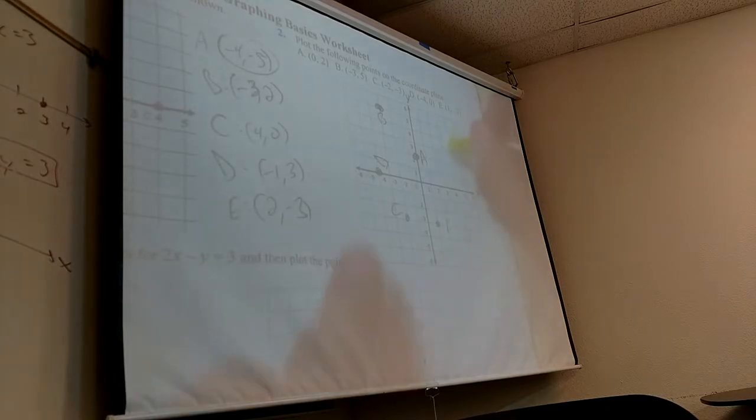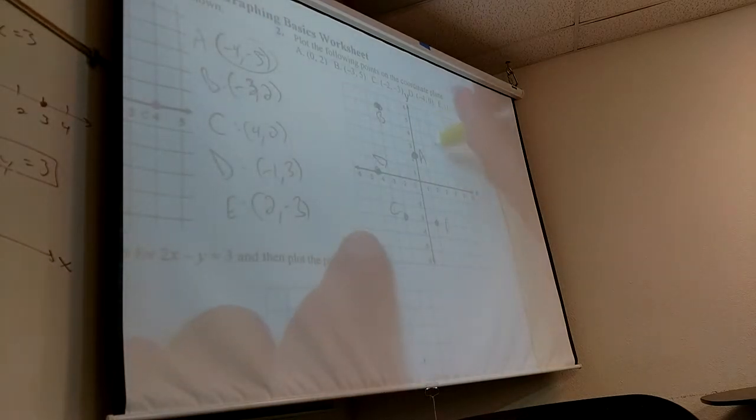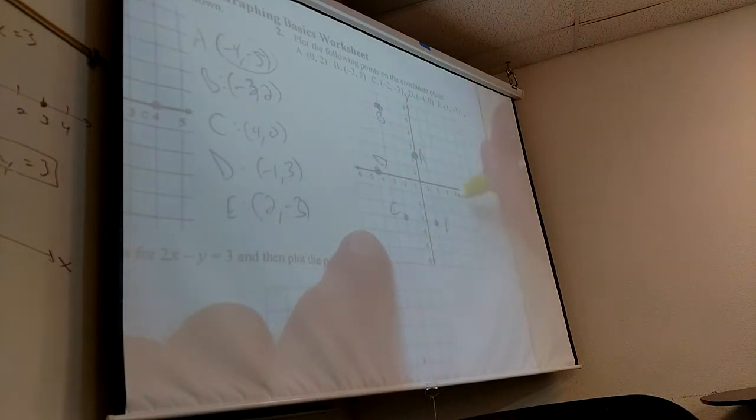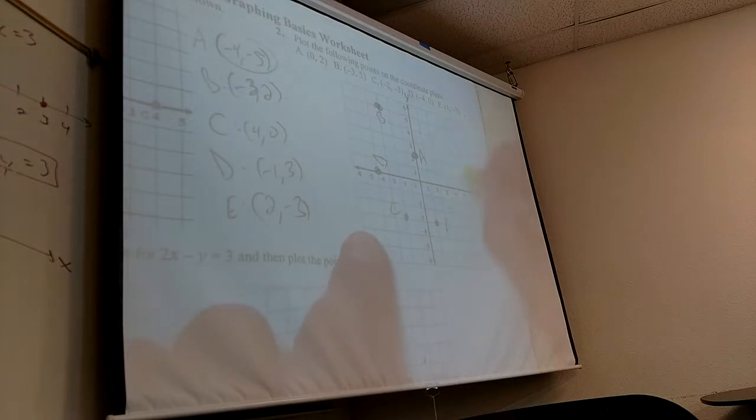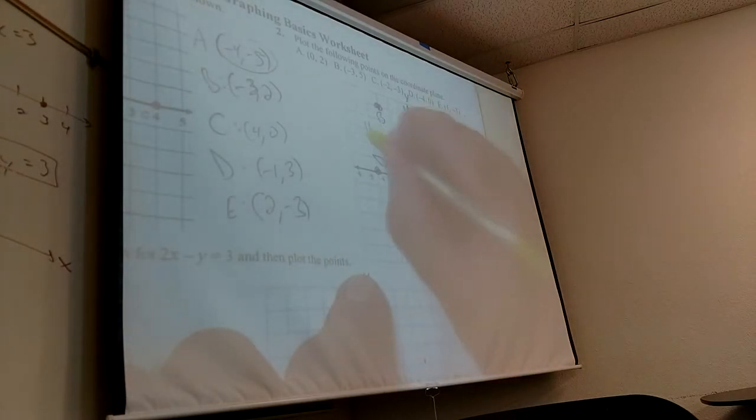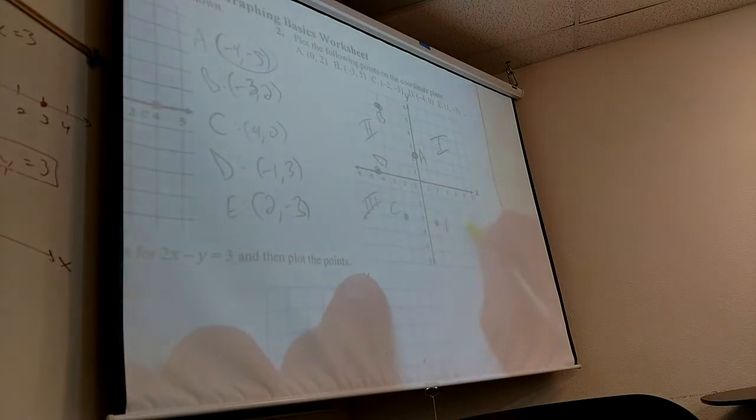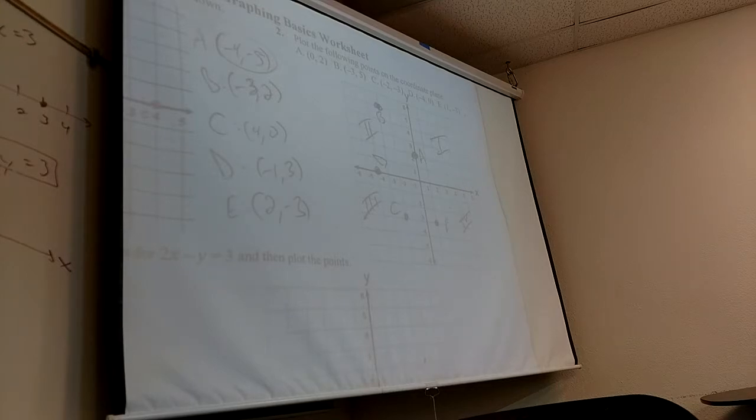What quadrant is this? See how these planes make one, two, three, four? This one right here is quadrant one. This is two. We go counterclockwise just because. They just had a 50-50 chance of choosing clockwise, and they chose the other way.